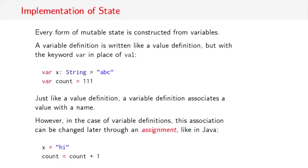So that was the abstract definition of stateful objects. In practice, every form of mutable state is constructed from some variables. A variable definition in Scala is written like a value definition, but with the keyword var in place of val. So you would write var x colon string equals abc, and that would give you a variable, x of type string, with initial value abc. Just like a value definition, a variable definition associates a value with a name. But if you wrote var, that association can be changed later through an assignment. So you could afterwards write x equals high and give a new value to the variable x. Or you could define a count to be 111 and then add one to the count.